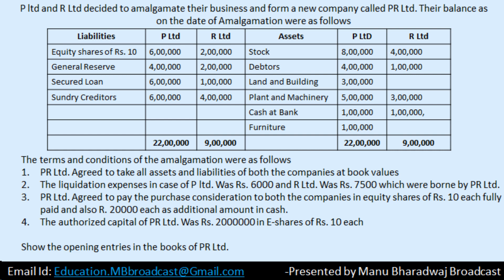PR Limited agreed to take all assets and liabilities of both companies. So PR Limited, the transferee company, is taking the assets and liabilities of both transferor companies. The liquidation expenses in case of P Limited were Rs. 6,000 and R Limited were Rs. 7,500, which were borne by PR Limited — the purchasing company is bearing the liquidation expenses of both.